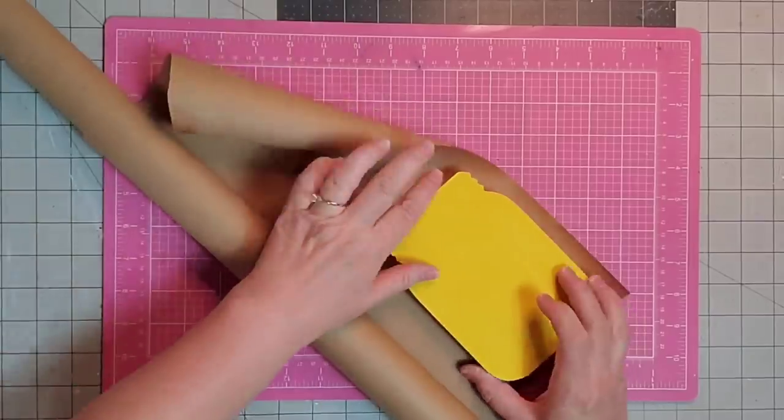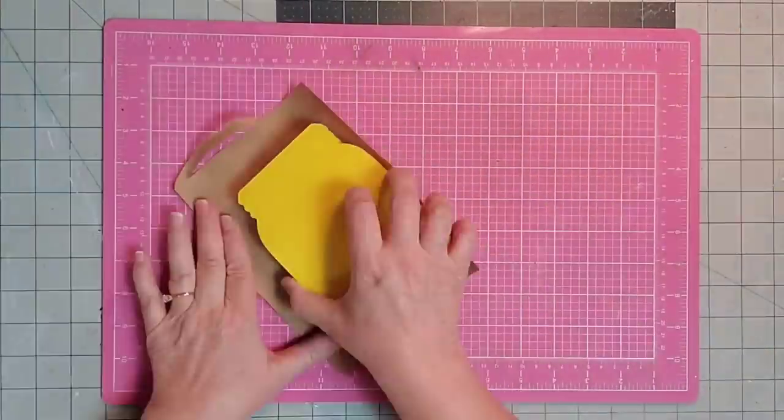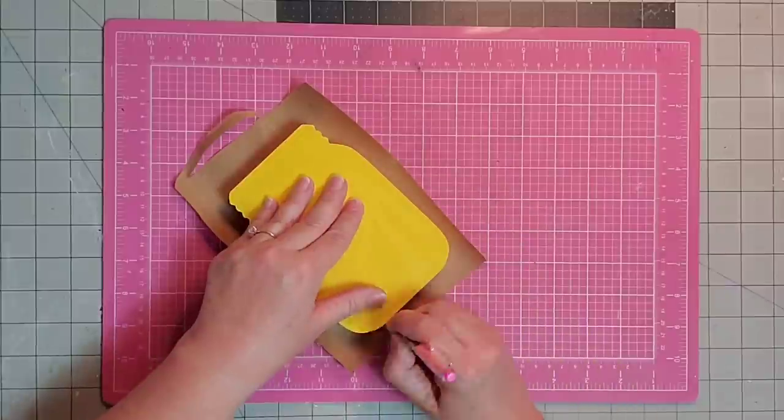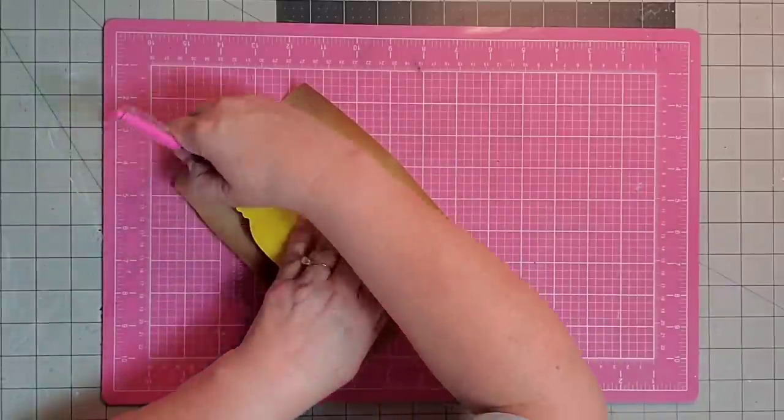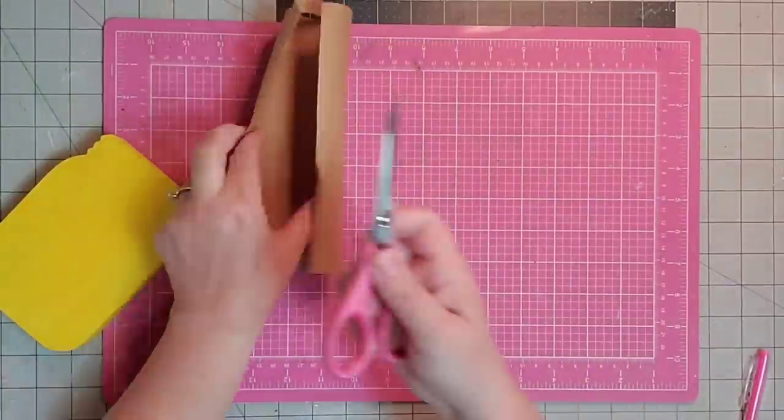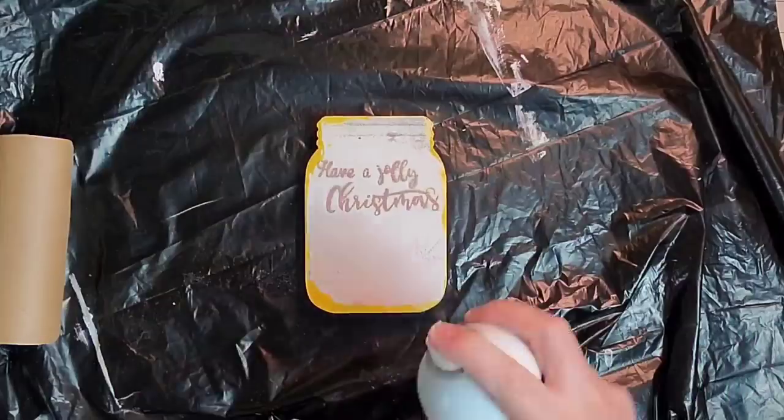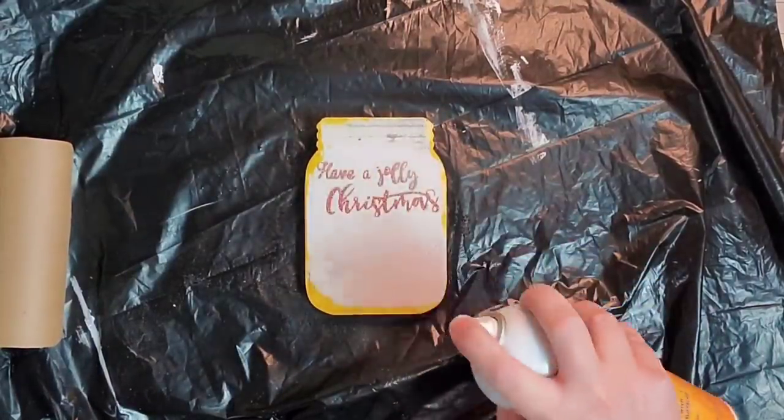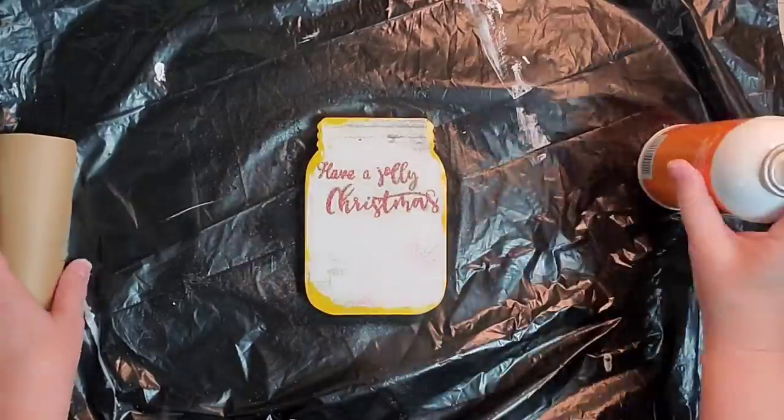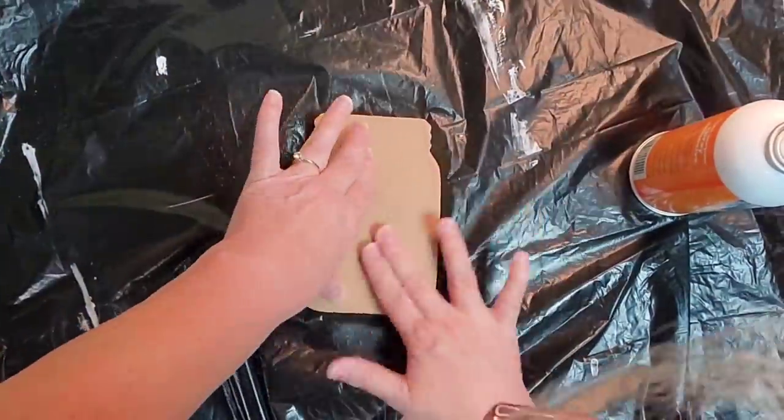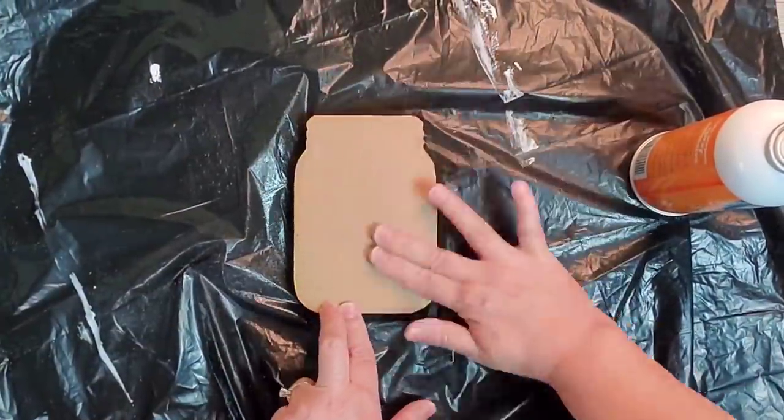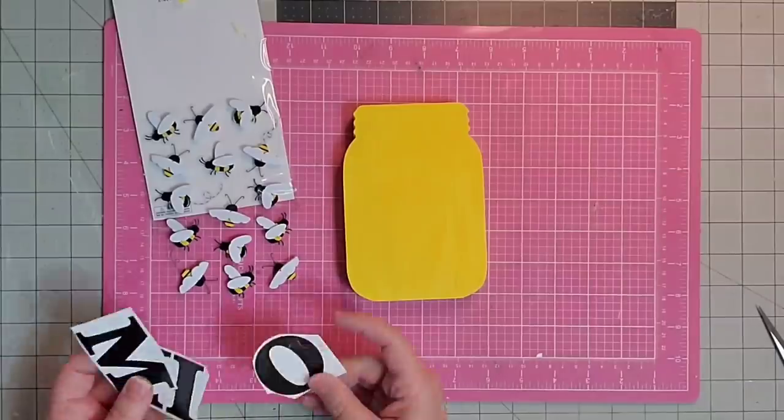For the back, I'm going to take a piece of this craft paper and trace around it, then cut that out with my scissors. I'll use a little spray adhesive on the back and cover up what used to be the front. You won't even know that it was a Christmas piece.